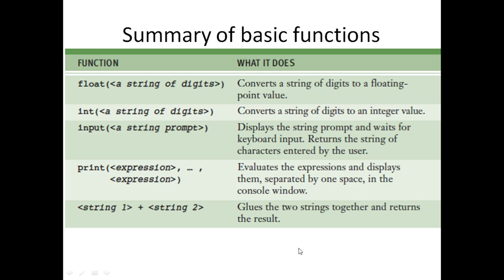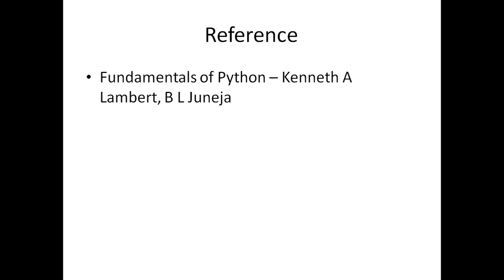This is a summary of the basic functions we have seen in this lecture. float() converts a string of digits to a floating-point value. int() converts a string of digits to an integer value. input() displays a string prompt, waits for keyboard input, and returns a string of characters entered by the user. print() evaluates expressions and displays them separated by one space in the console window. Try installing Python and doing these simple codes in your interactive shell environment. The reference book used is 'Fundamentals of Python' by Kenneth A. Lambert.